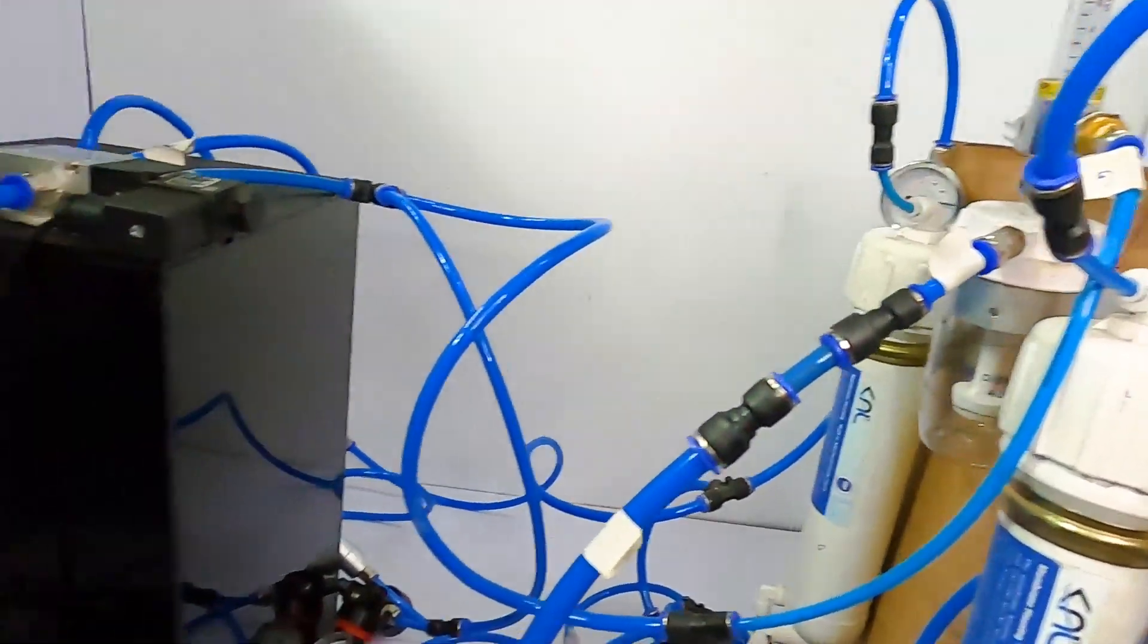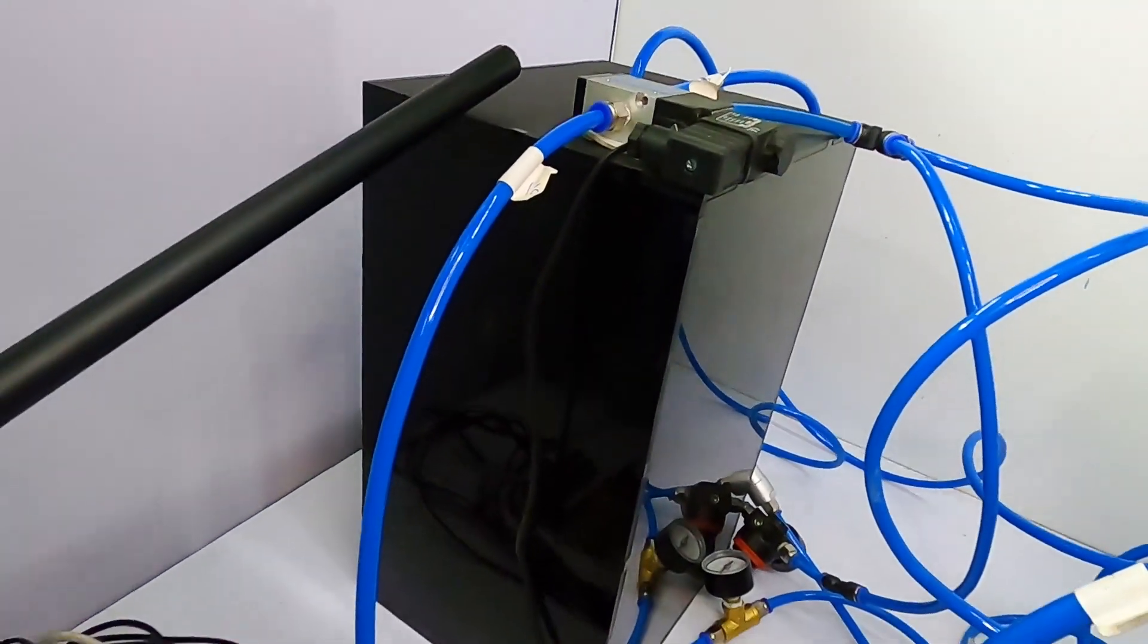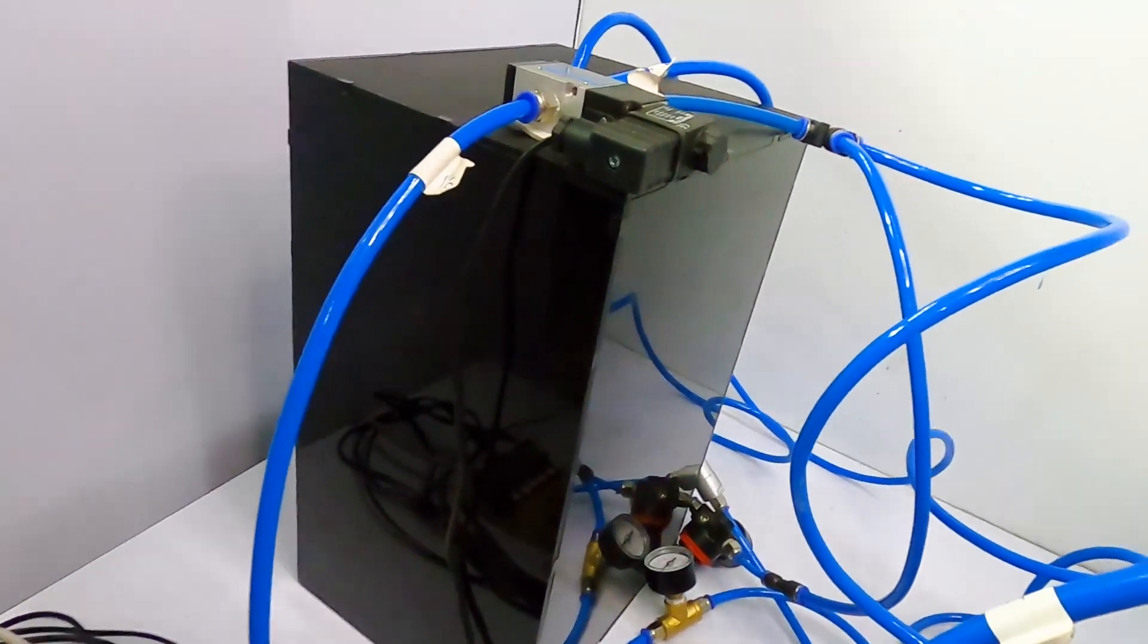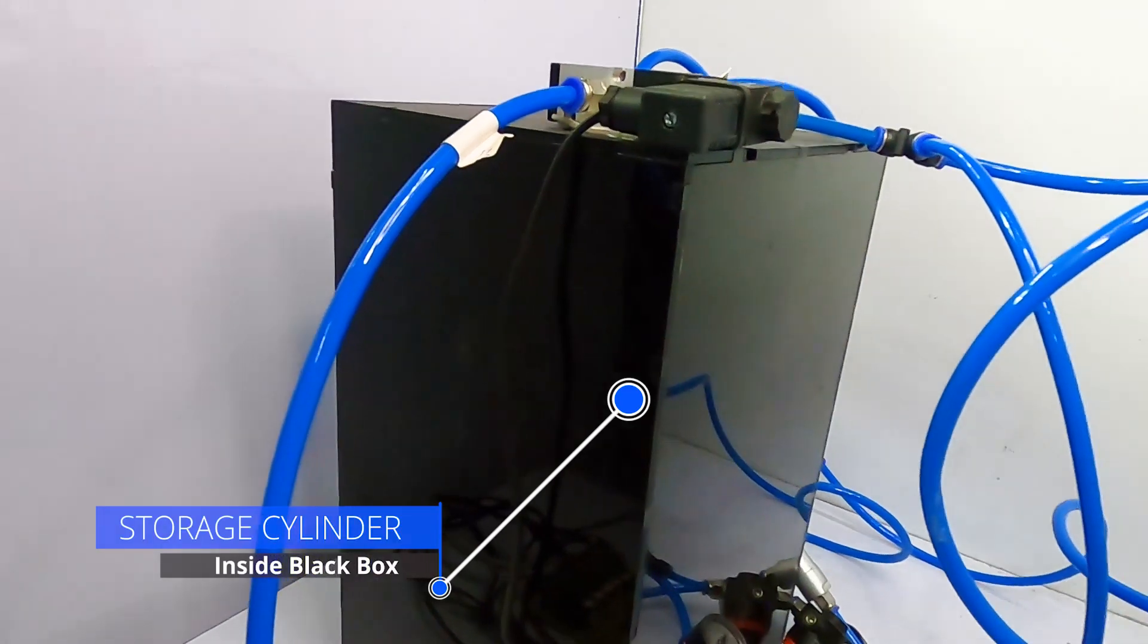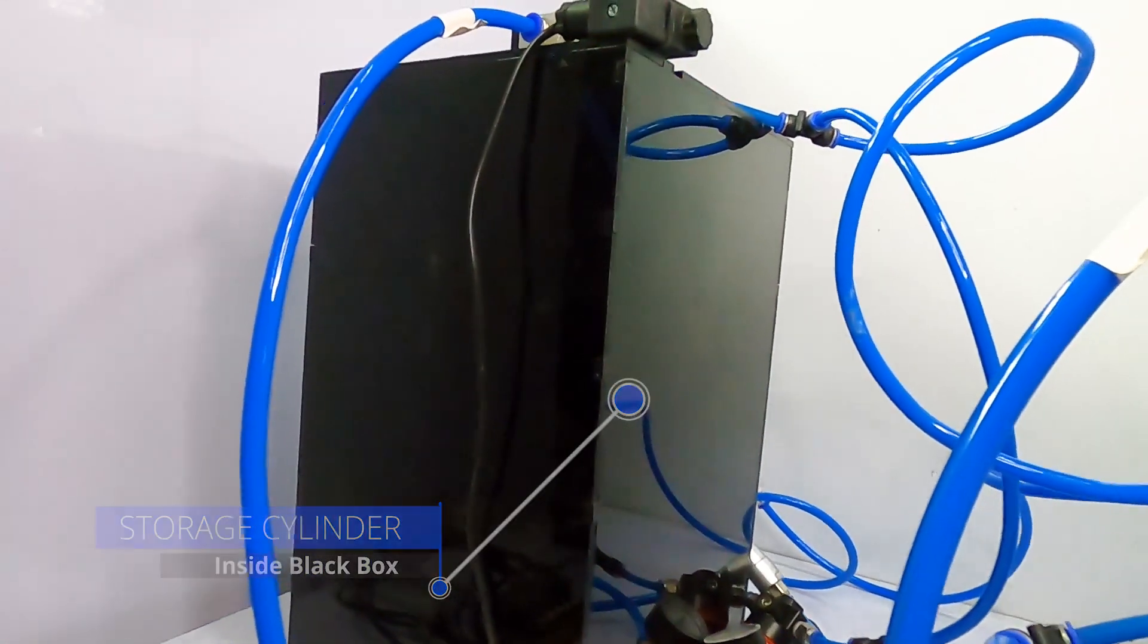Now that we have the oxygen-rich air, high oxygen concentration air generated, we store this air in a separate cylinder which you can see in this black box. This has a separate cylinder which stores the generated oxygen-rich air.